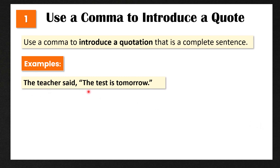The teacher said, the test is tomorrow. Here we have the speaker tag introducing the quotation that comes after it. The teacher said, comma, quotation mark, the test is tomorrow, period, closing quotation mark. So the comma comes before the quotation mark with a space in between. Note that 'the test is tomorrow' is a complete sentence.